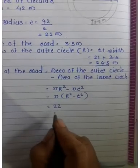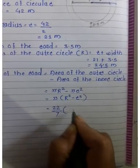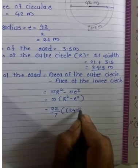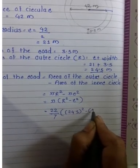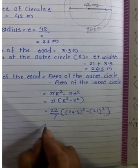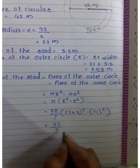In the bracket, R squared means 24.5 squared minus 21 squared equals 22 upon 7 times this difference.